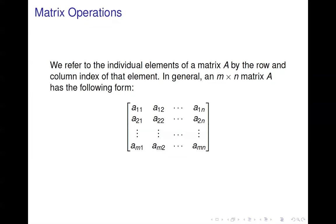This is section 2.1 on matrix operations. We refer to an M by N matrix A — a matrix with M rows and N columns. The individual elements in the matrix we denote by lowercase a with a subscript ij, where i is the row index and j is the column index.